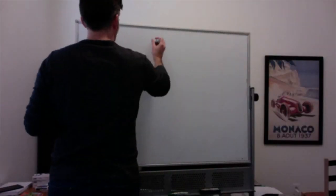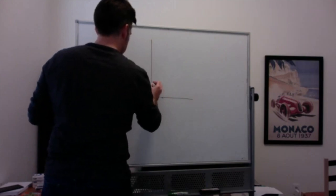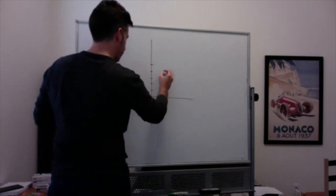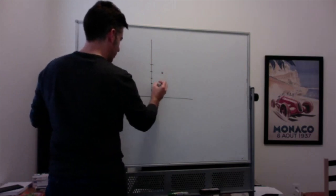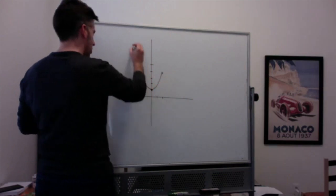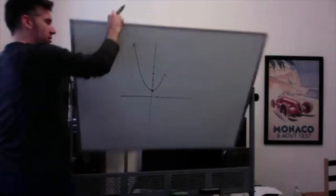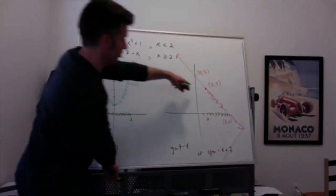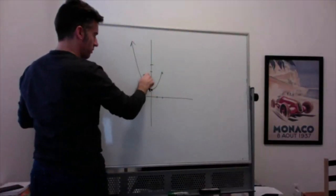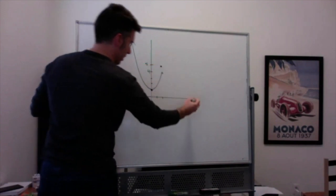Putting it all together on one graph: here's y equals x squared plus one, and the point (2, 4) is where that piece ends. Then y equals seven minus x starts at the point (2, 5), so there's going to be a little jump. It goes down to the right from there.